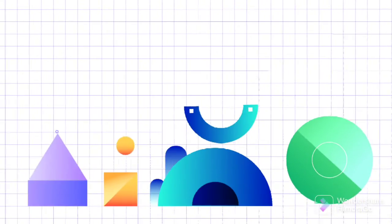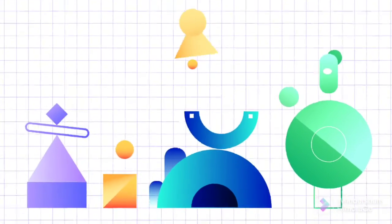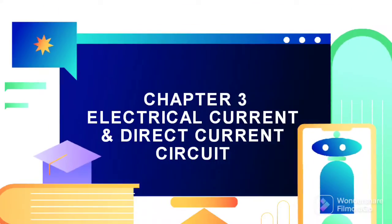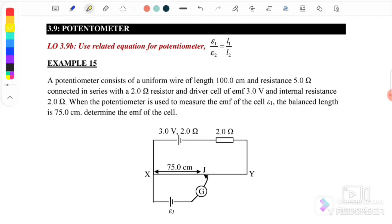We continue with Chapter 3: Electrical Current and Direct Current Circuits. In this video, we continue with Section 3.9, the potentiometer, Example 15. The potentiometer consists of a uniform wire with a length of 100 cm and a resistor of 5 ohm connected in series with a 2 ohm resistor, a driver cell of EMF 3 volt, and internal resistor of 2 ohm.